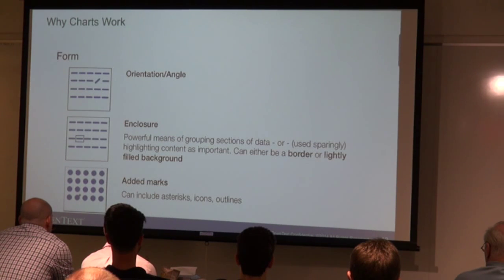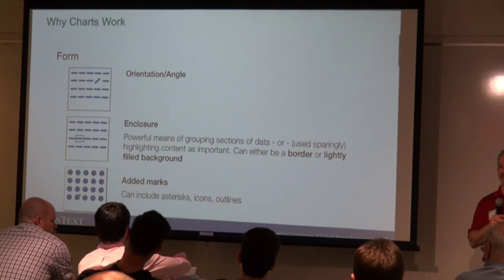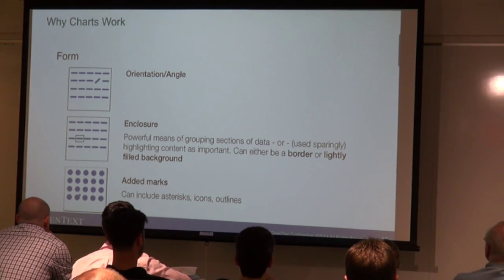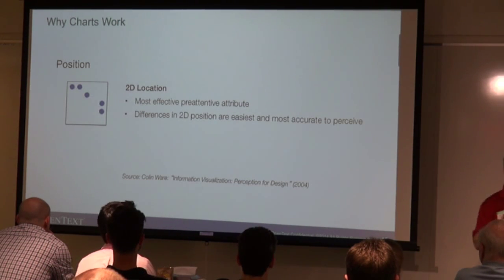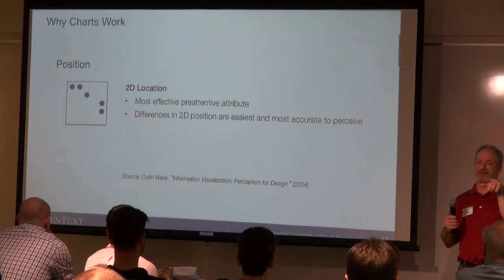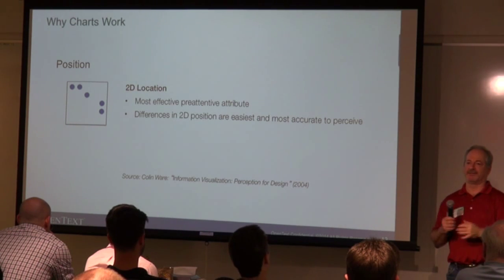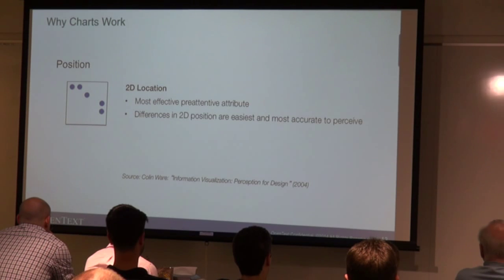Some more forms include orientation angles — if something is at a slightly different angle — and enclosure. Added marks is also another form of shape. All these different attributes work differently. The third pre-attentive attribute is position. The key one there is 2D location, which is probably our most effective pre-attentive attribute. In a 2D space — scatter plots, line charts, bar charts — something being higher or lower, left or right, we see those very clearly.